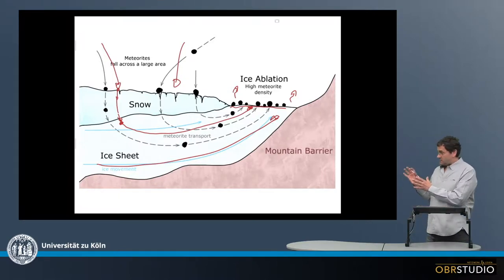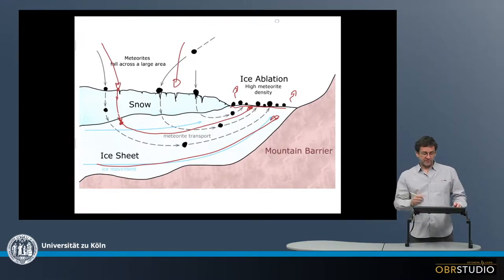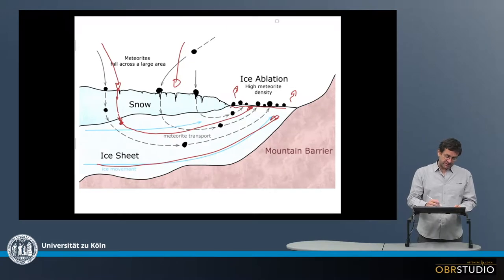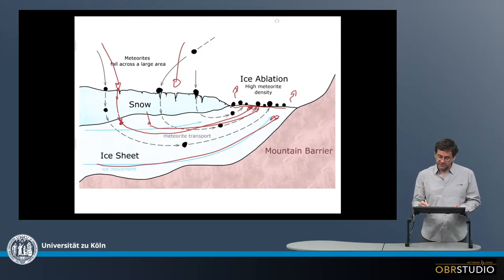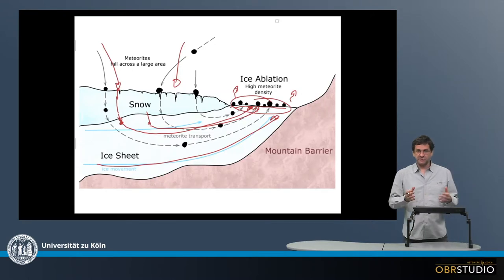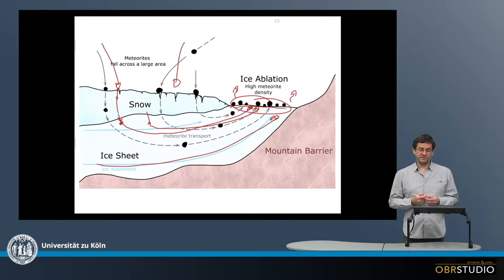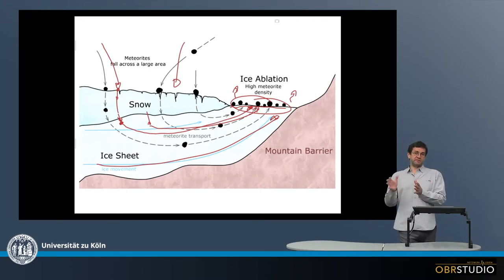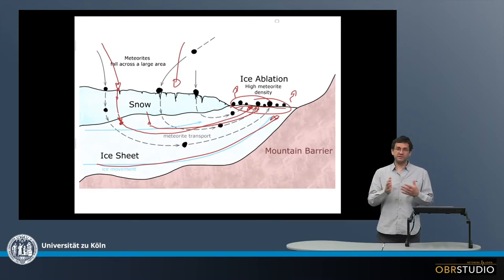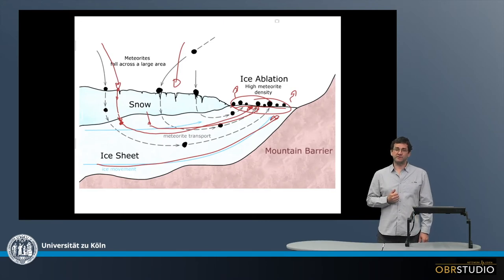The neat part of this effect is that meteorites from a very large area that get encapsulated in the ice can all move to this smaller ablation zone, meaning a high-density area of meteorites is produced. This is where meteorites in Antarctica are often searched for, and it is a very helpful effect for the search.